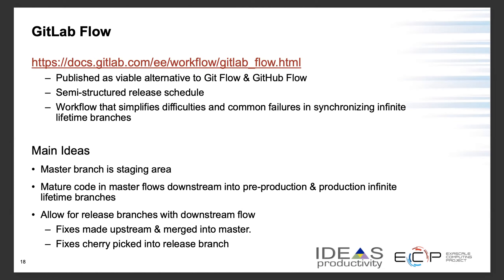GitLab workflow emerged because some teams did not want Git flow or GitHub flow and didn't want to base features off a develop branch. In GitLab flow, all features and fixes first go into master, which is considered the staging area. When you want to deploy code to production or pre-production, you have additional branches for those environments. Mature code from master is cherry-picked into production and pre-production branches for deployment.